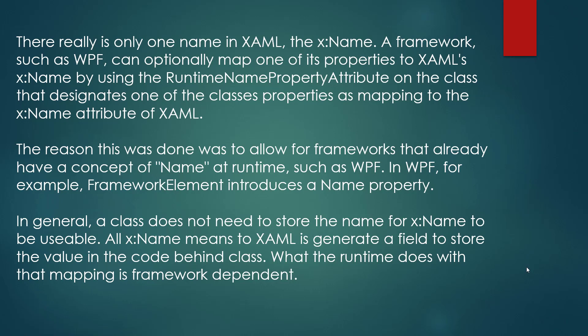There is one more name in XAML: x:Name. A framework such as WPF can optionally map one of its properties to XAML's x:Name by using the RuntimeNameProperty attribute on the class. This designates one of the class's properties as mapping to the x:Name attribute in XAML. The reason this was done was to allow frameworks that already have a concept of name at runtime, such as WPF.